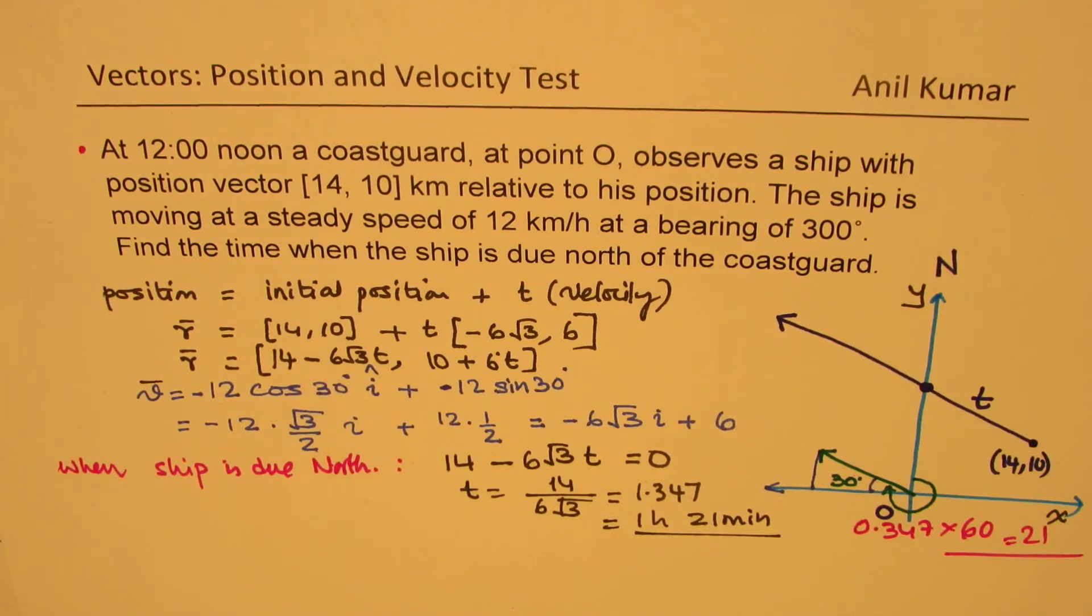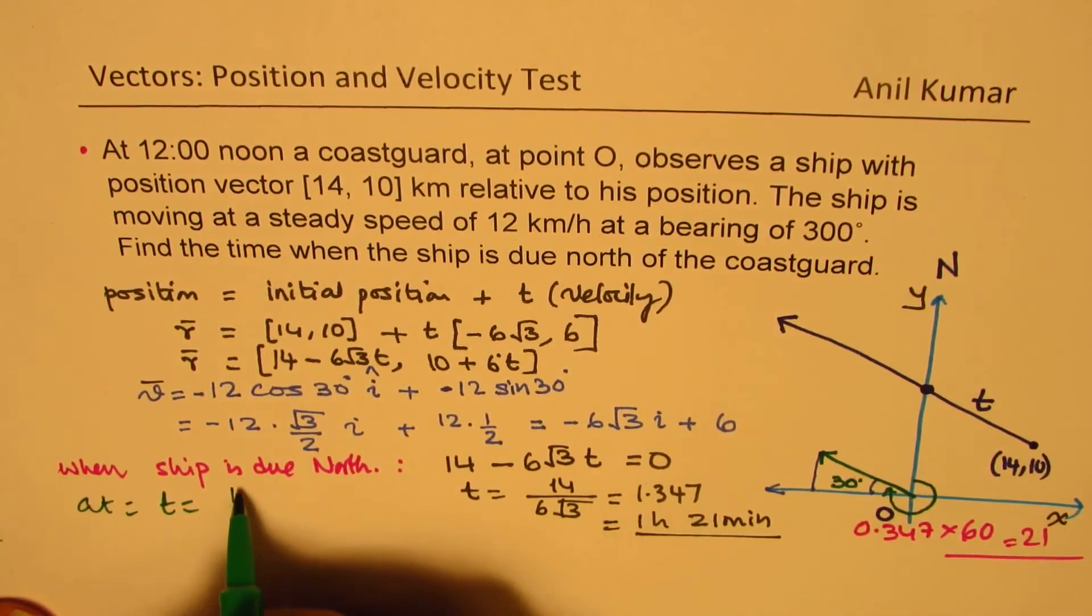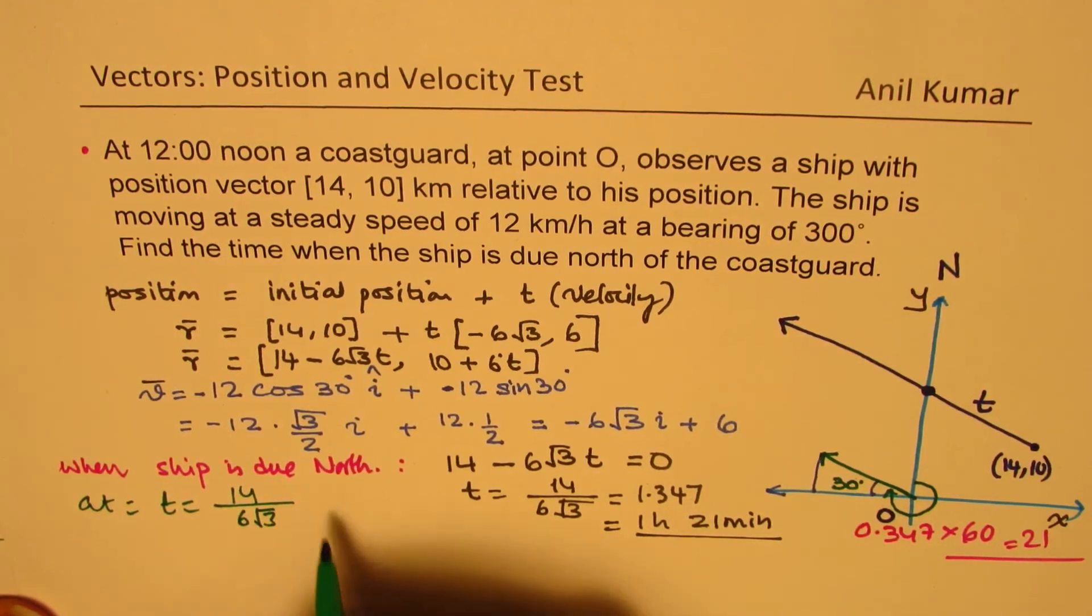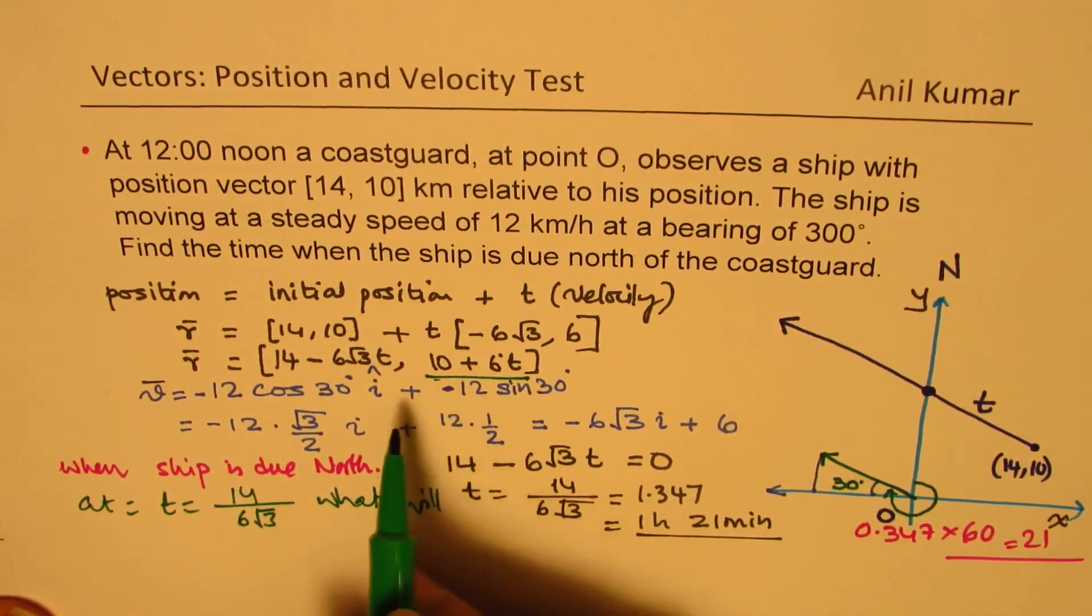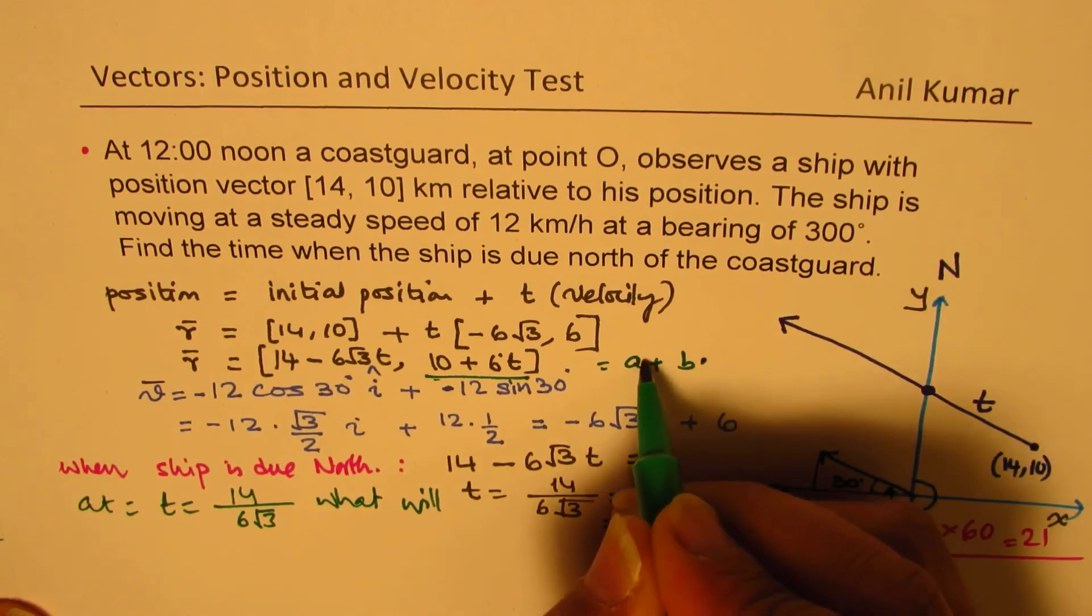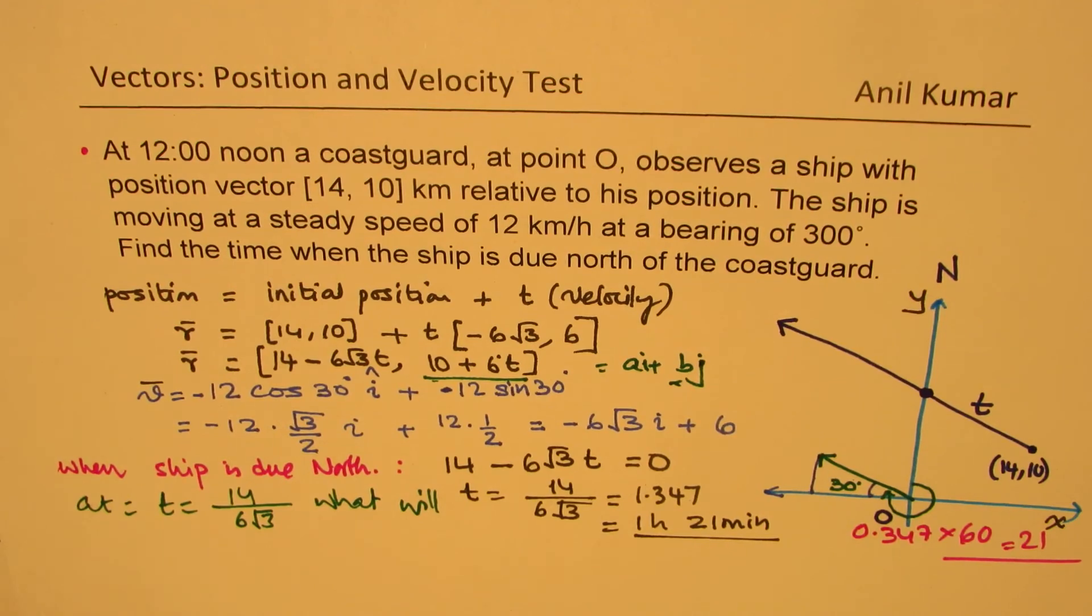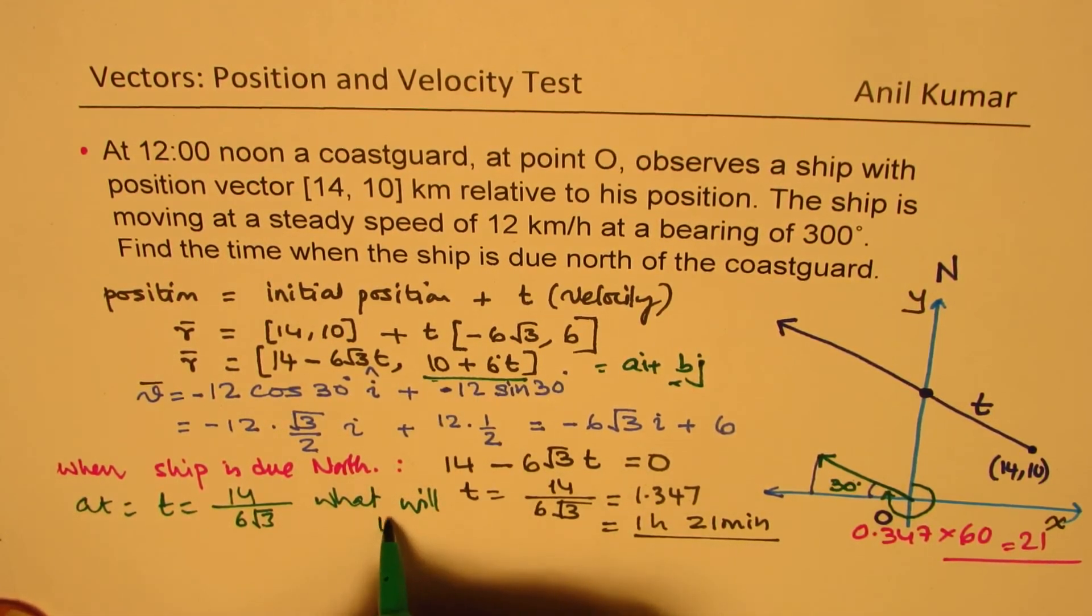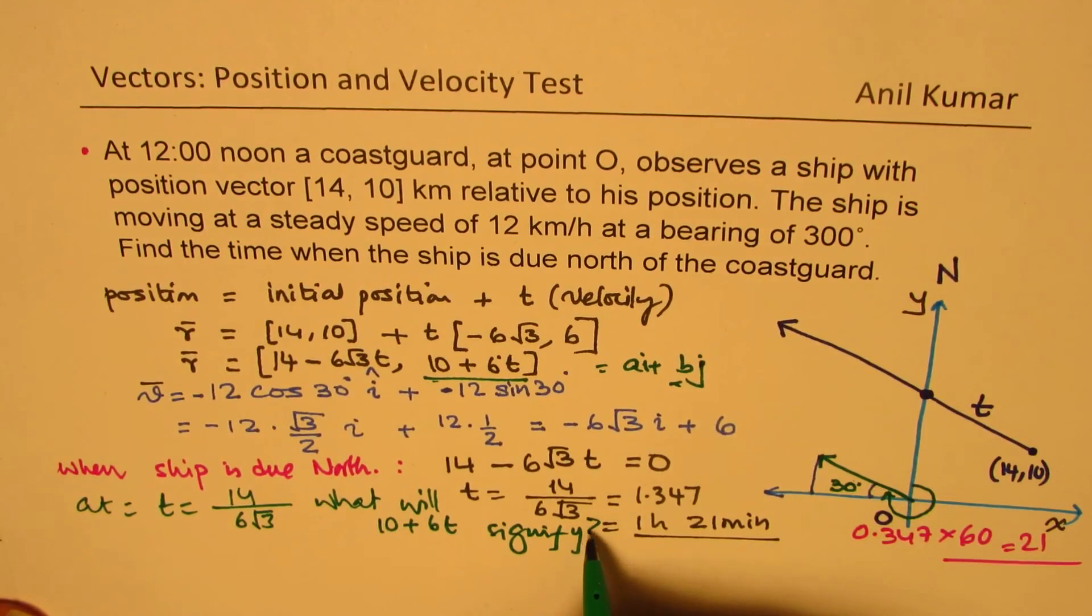Now, there could be extension to this question. Tell me, at T equal to 14 over 6√3, what will the y component signify? If we have written this in the form of AI plus BJ, what will B signify? What will 10 plus 6t signify? So that is a question for you now.